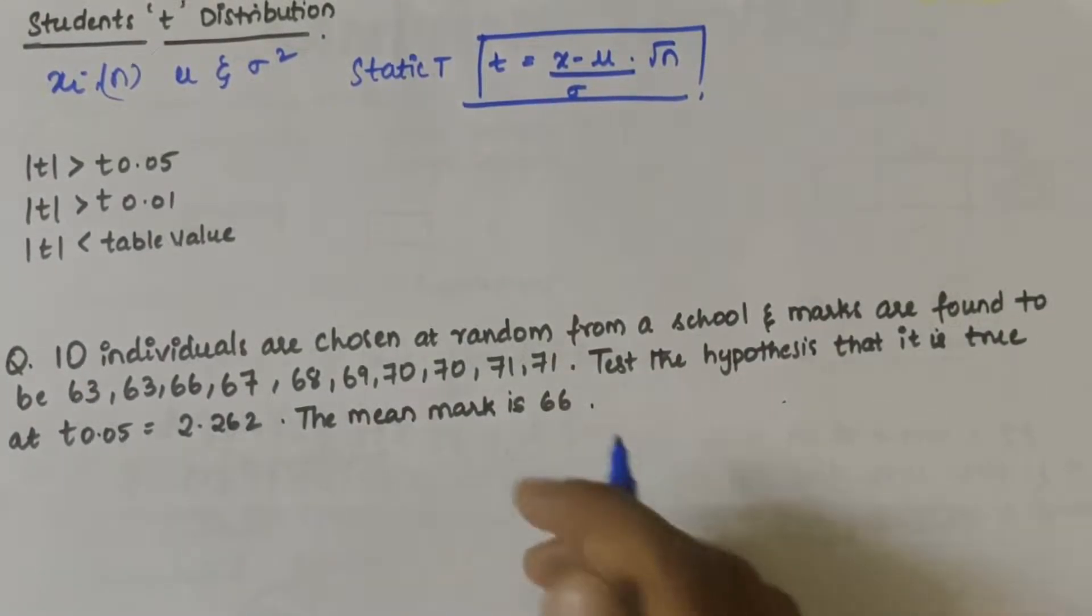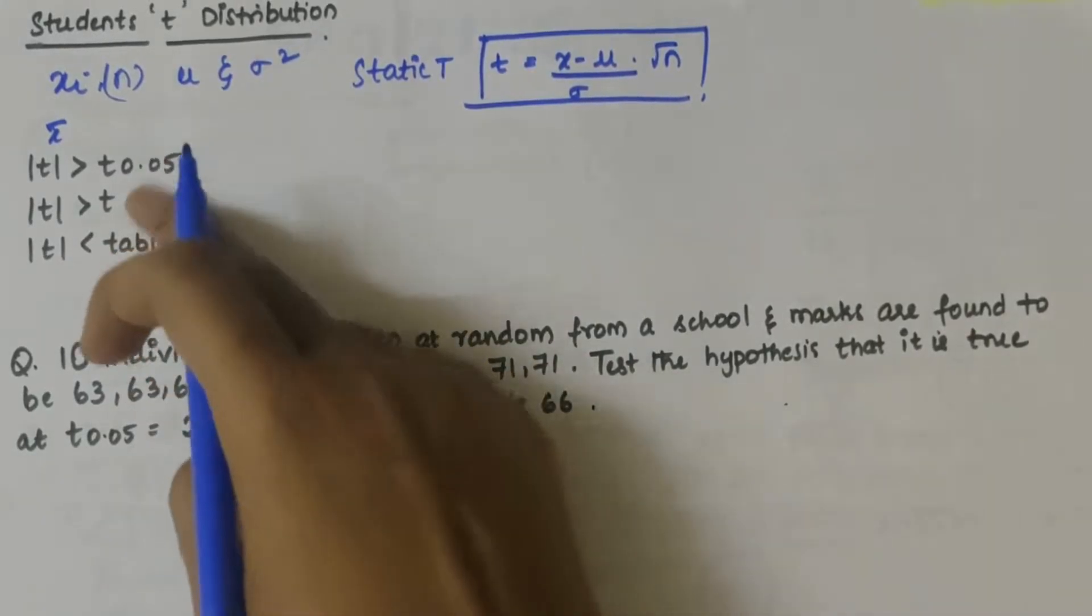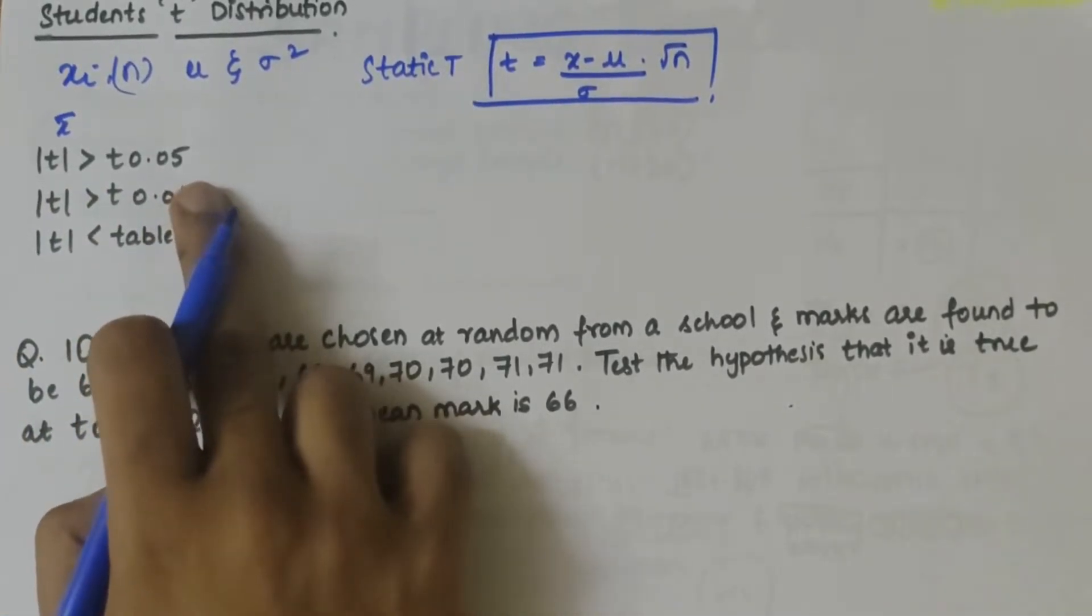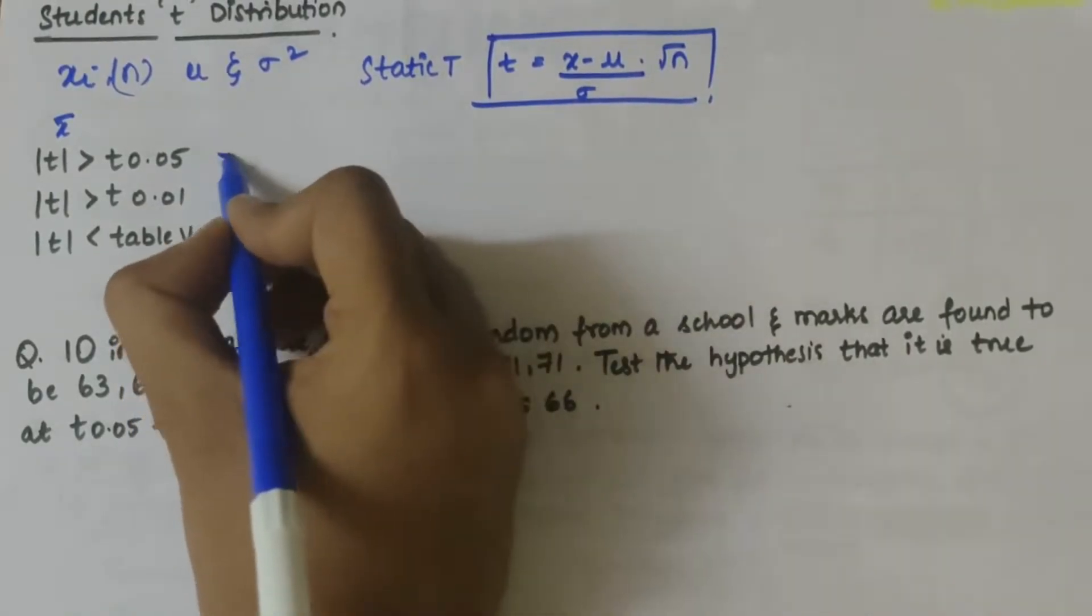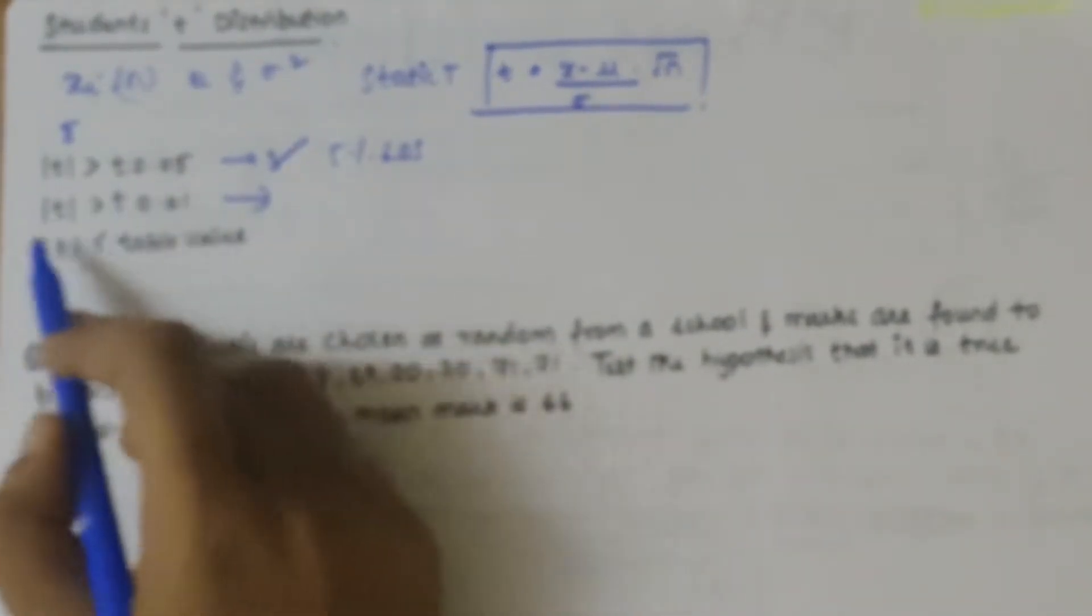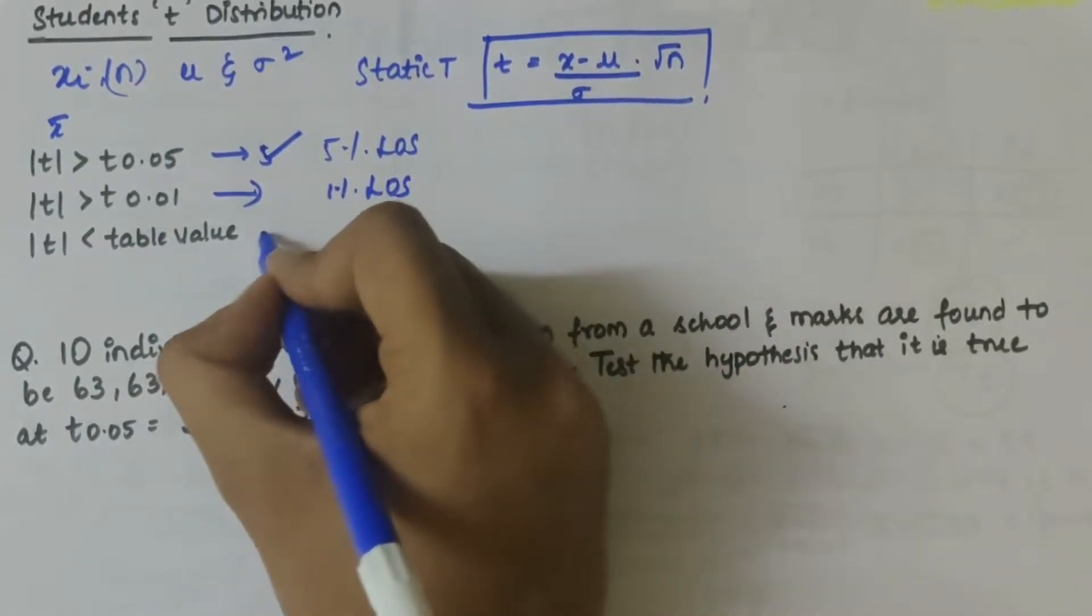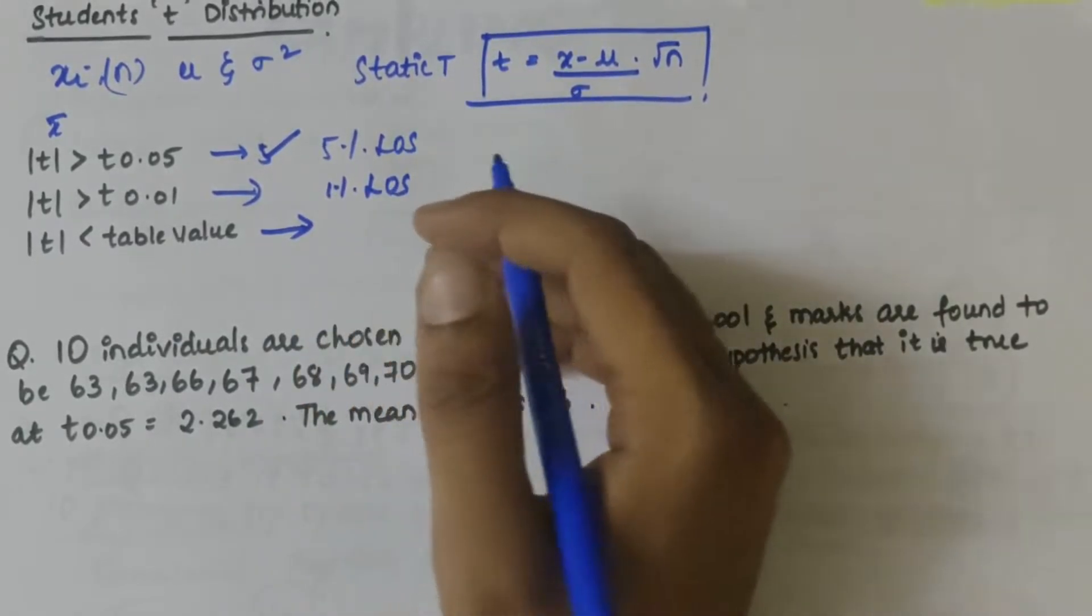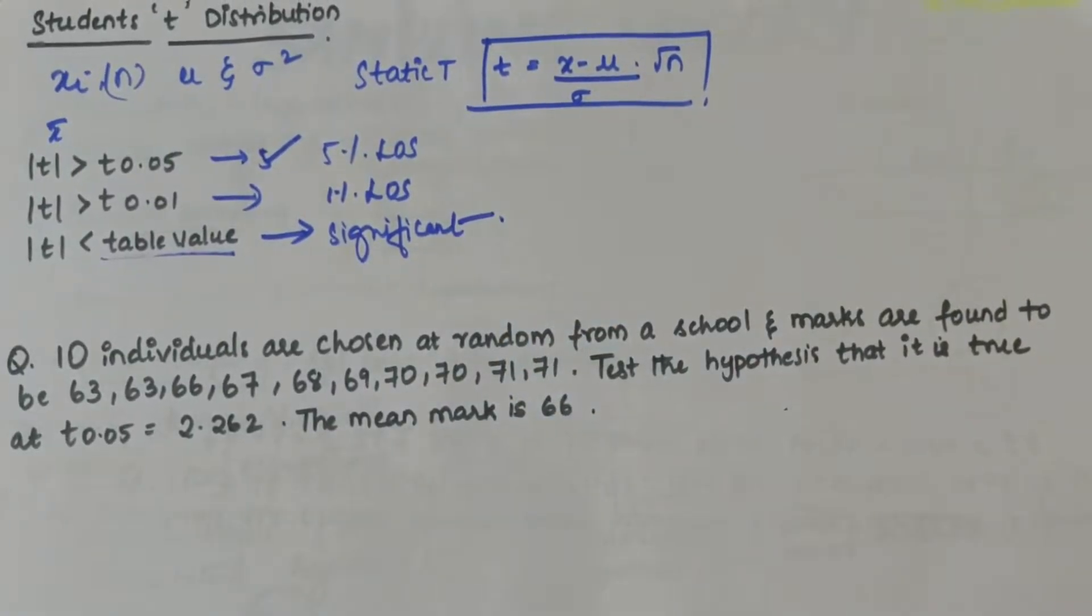To conclude, if mod of t is greater than t at 0.05 level of significance, the difference between x̄ and mu is said to be significant at 5 percent level of significance. If this is true then the difference is significant at 1 percent level. The data is said to be consistent with the given hypothesis if the table value is not significant.